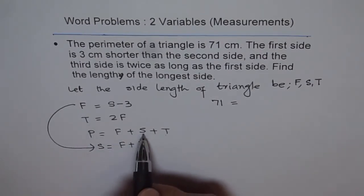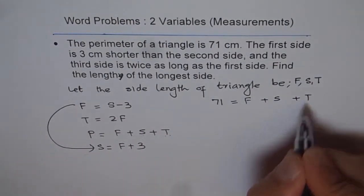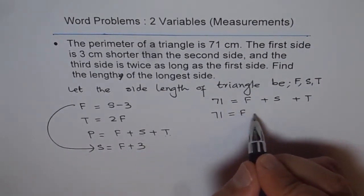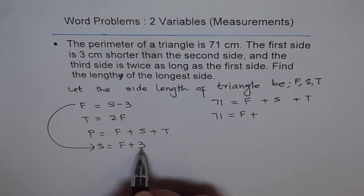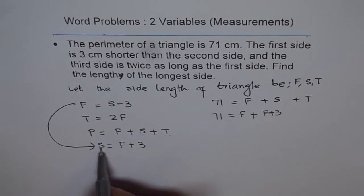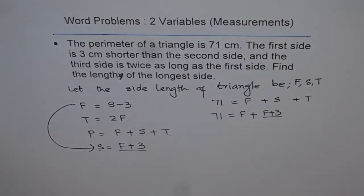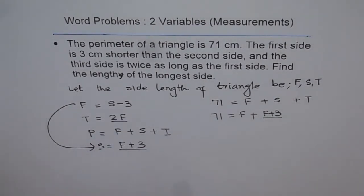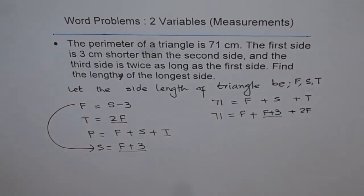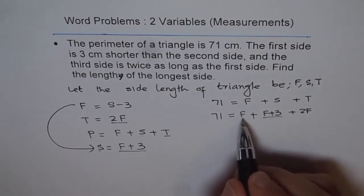Perimeter is F plus S plus T, and the perimeter is 71. For S we substitute F plus 3, and for T we substitute 2F. So we get 71 equals F plus (F plus 3) plus 2F. This gives us one equation with only one variable, which is F.